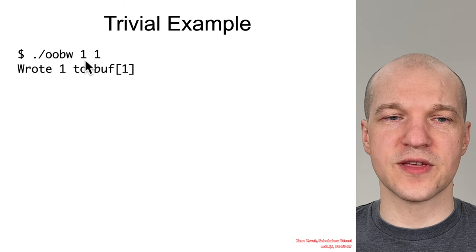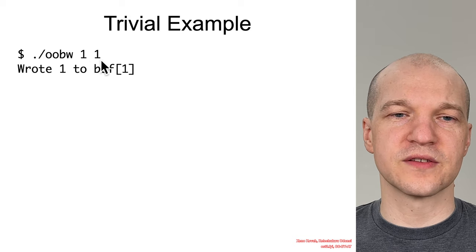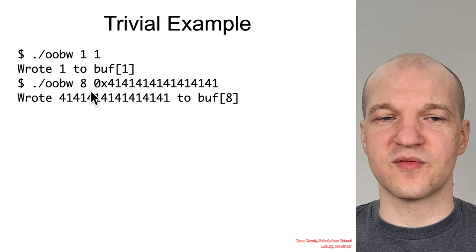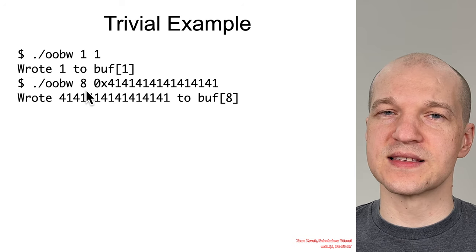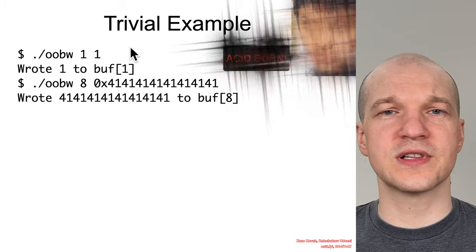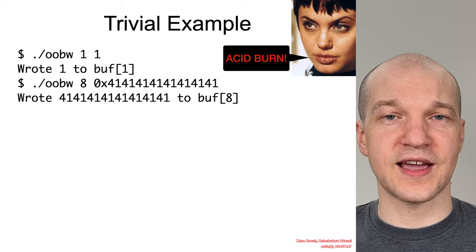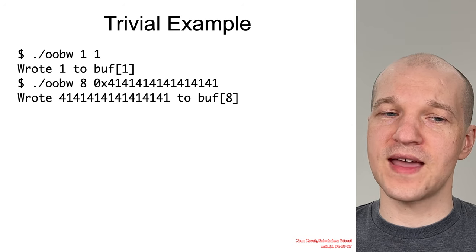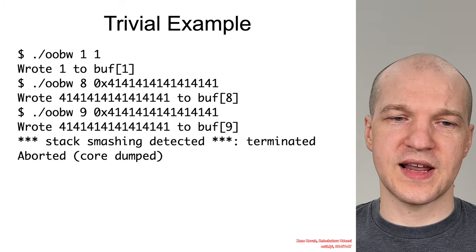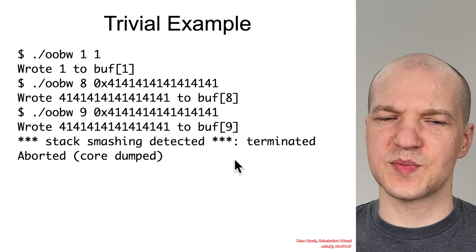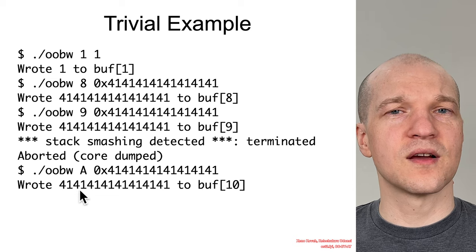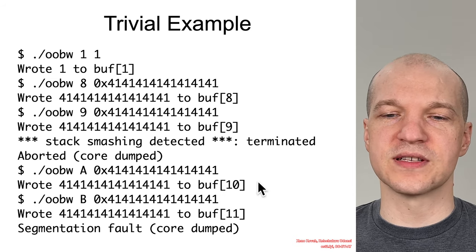So if we run our trivial example with argv[1] as the value being written and argv[2] as the offset to write it to: writing 1 into buffer[1] — no problem, no crash. If we say out-of-bound write at offset 8, which is out-of-bounds for an 8-byte buffer, and we write 0x414141 — which is the hexadecimal value for A's, an attacker-controlled value — it's actually no crash. At offset 9, we do get a crash, and specifically it says 'stack smashing detected.' At offset 10, no crash. At offset 11, crash again.